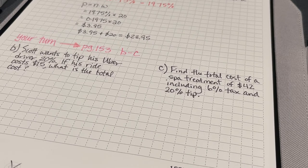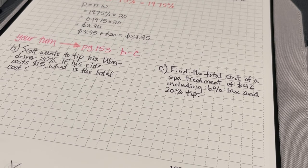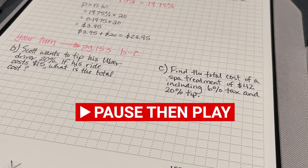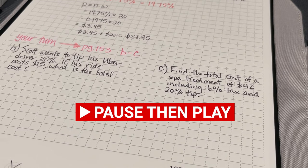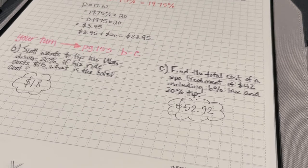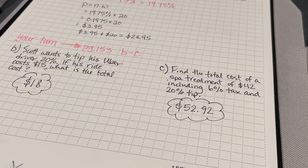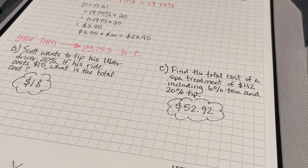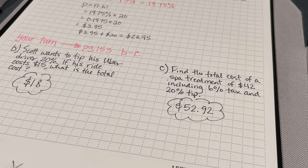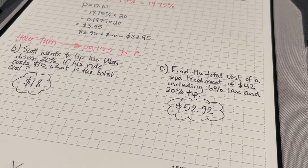Now, it's your turn. I want you to practice Problems B and C on page 153. Pause the video here. Come up with your solution. Hit play and see if your answer matches mine. For Problem B, I got a total of $18. That's the $15 for the Uber ride plus the 20% tip. In Problem C, I got a total of $52.92. And that's the cost of the spa treatment plus the tax and tip.